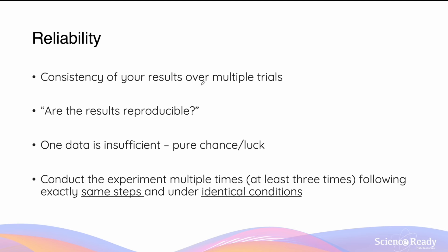Reliability of results refers to the consistency of the results over multiple trials or repetitions. Something simple you can ask yourself when determining whether the results are reliable is: are your results reproducible? If you were to repeat the experiment one more time, how confident are you that you will achieve the same or similar results? If your answer is yes, I am confident, then the results are reliable.